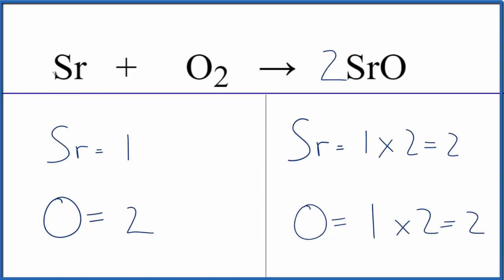Now, strontium's all by itself. We put a coefficient of 2 in front of that. 1 times 2, that gives us 2. These numbers here, they're the same. This equation is balanced.